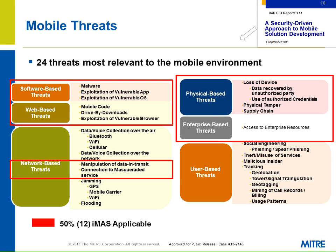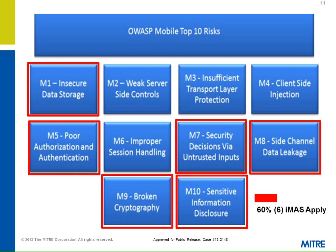A few years ago, MITRE put together a report for the Department of Defense CIO describing all the various mobile threats. They're software-based, web-based, network-based, physical-based, enterprise, and user-based. IMAS is applicable to about half of these — 12 or so. Speaking of OWASP, the OWASP Mobile Top 10: we cover six of these, including insecure data storage, poor authorization and authentication, broken cryptography, security decisions, and sensitive information disclosure.